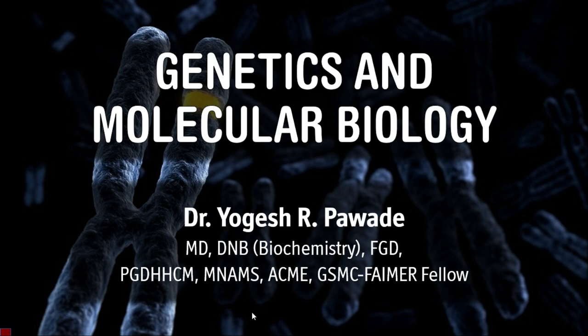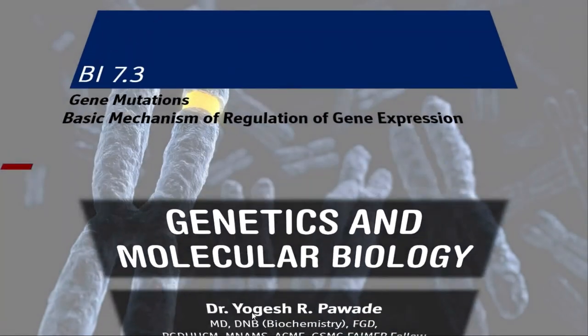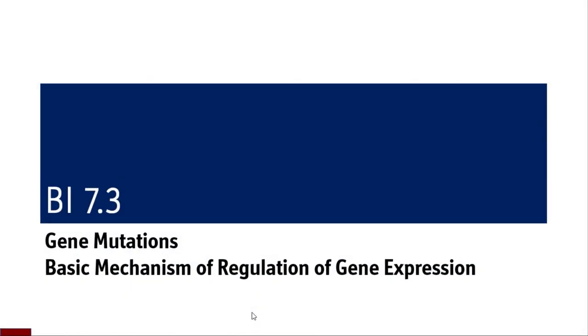Up to this session, we have covered structure of nucleotides, nucleic acids including DNA, RNA and various other forms of RNA, then replication, transcription, translation, both post-transcriptional as well as post-translational mechanisms. Now we are switching on to the next competency, BI 7.3, in which we are going to consider gene mutations and basic mechanisms of regulation of gene expression.